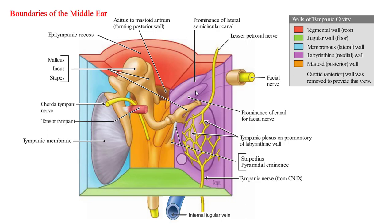The posterior wall separates the tympanic cavity from the mastoid antrum and mastoid air cells. Superiorly, there is an opening or aditus through which the epithympanic recess communicates with the mastoid antrum. Infection of the middle ear space may result in subsequent infection of the mastoid air cells, sometimes requiring mastoidectomy. Within the posterior wall courses the chorda tympani, and the facial nerve prominence may be seen to continue on the medial wall. On the posterior wall is also the prominence of the stapedial pyramid or pyramidal eminence, from which the tendon of the stapedius arises before attaching to the neck of the stapes.